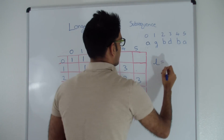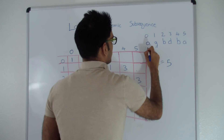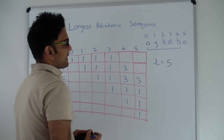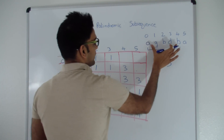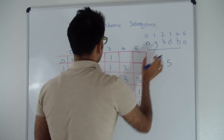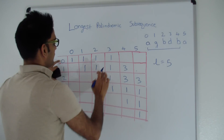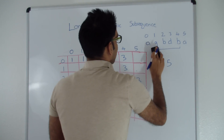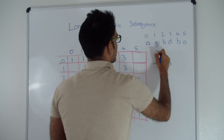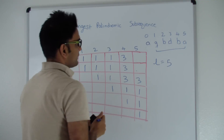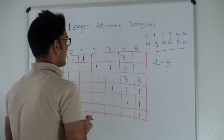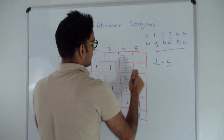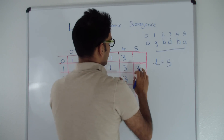Now L equals 5. For positions 0 to 4 — A is not same as B — so the longest palindromic subsequence is max of cell 0,3 or cell 1,4, which is max of 1 or 3, so 3. For positions 1 to 5 — G and A are different — so cell 1,5 is max of cell 1,4 or cell 2,5, which is 3.